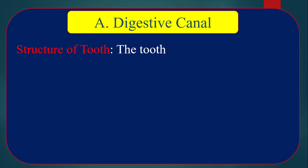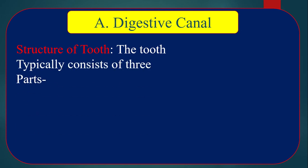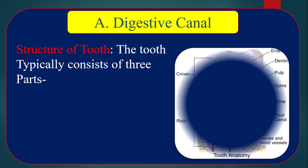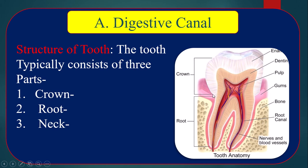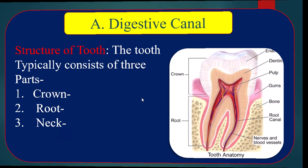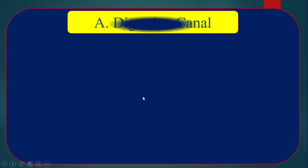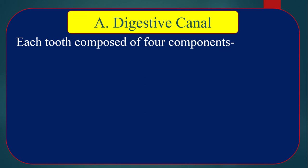The structure of a tooth typically consists of three parts. Number one, the crown — the part above the gum, which is the visible part of the tooth. Number two, the root — the part of the tooth submerged into the gum. Number three, the neck — the short region between the crown and the root. Each tooth is also composed of four components.